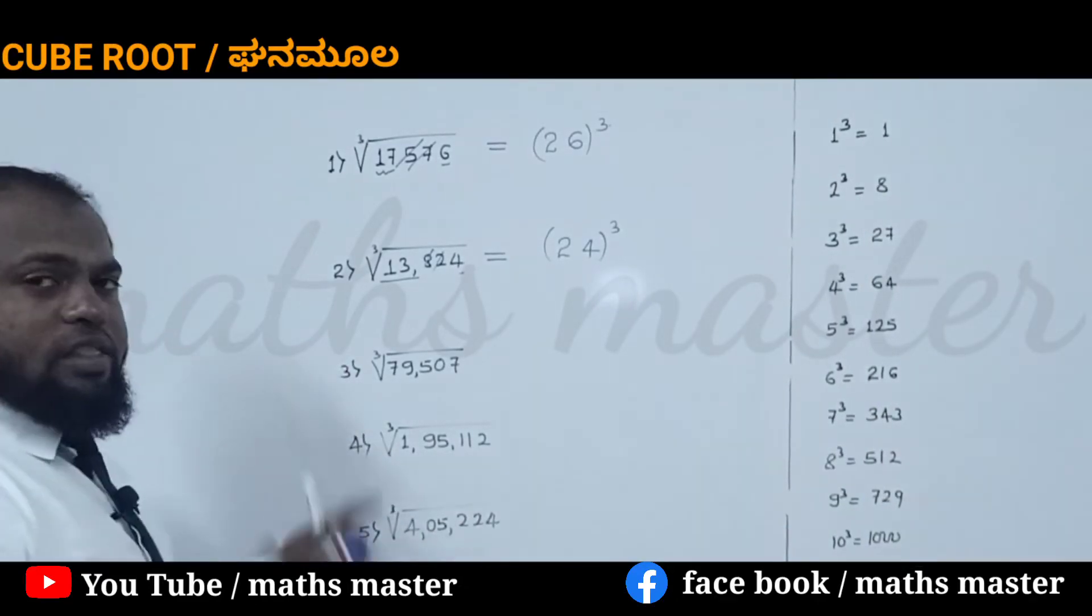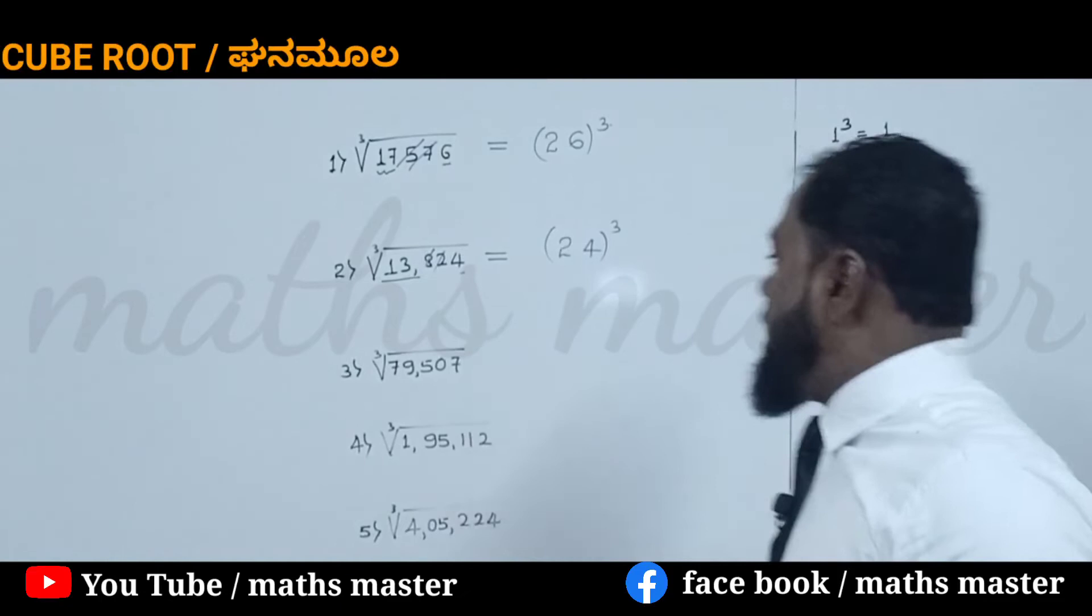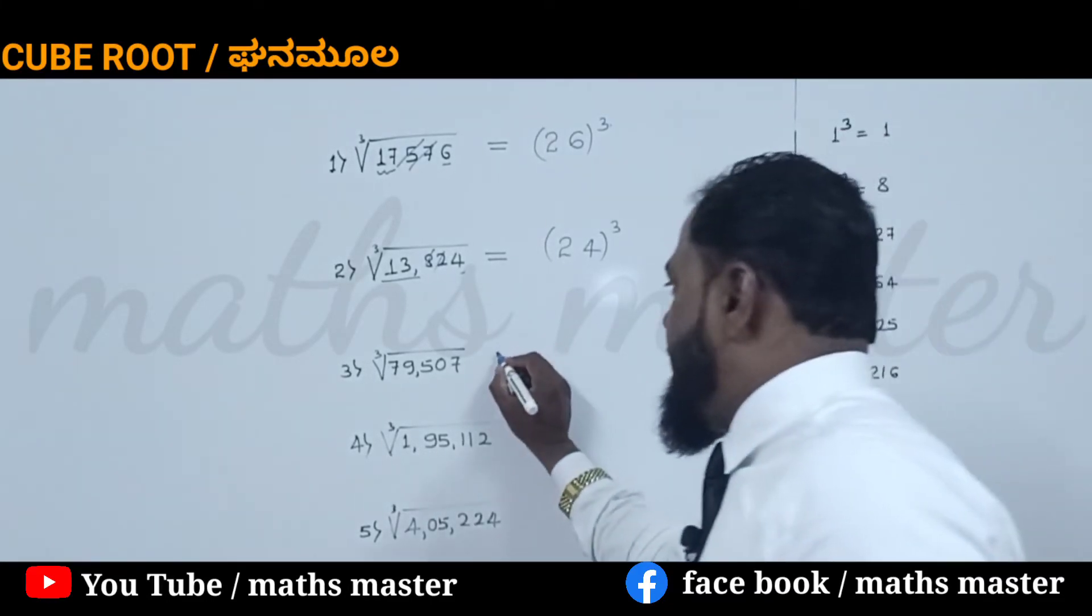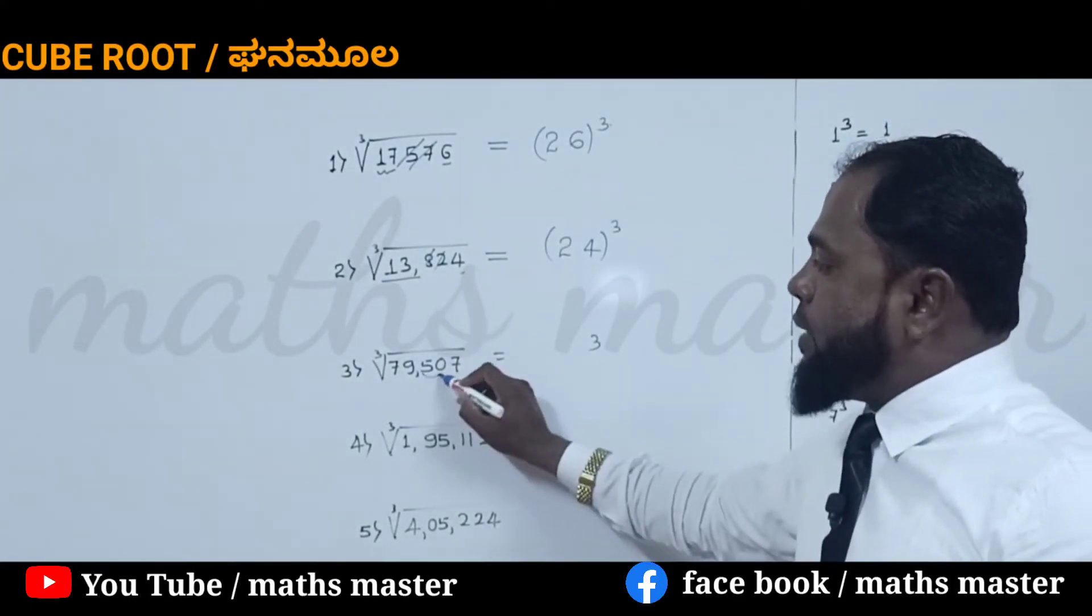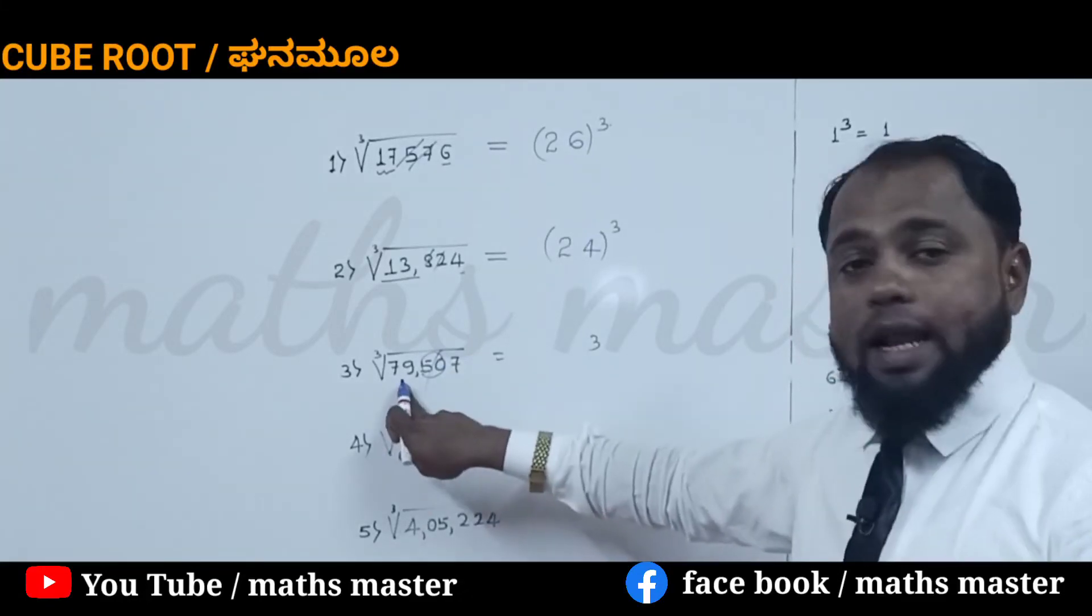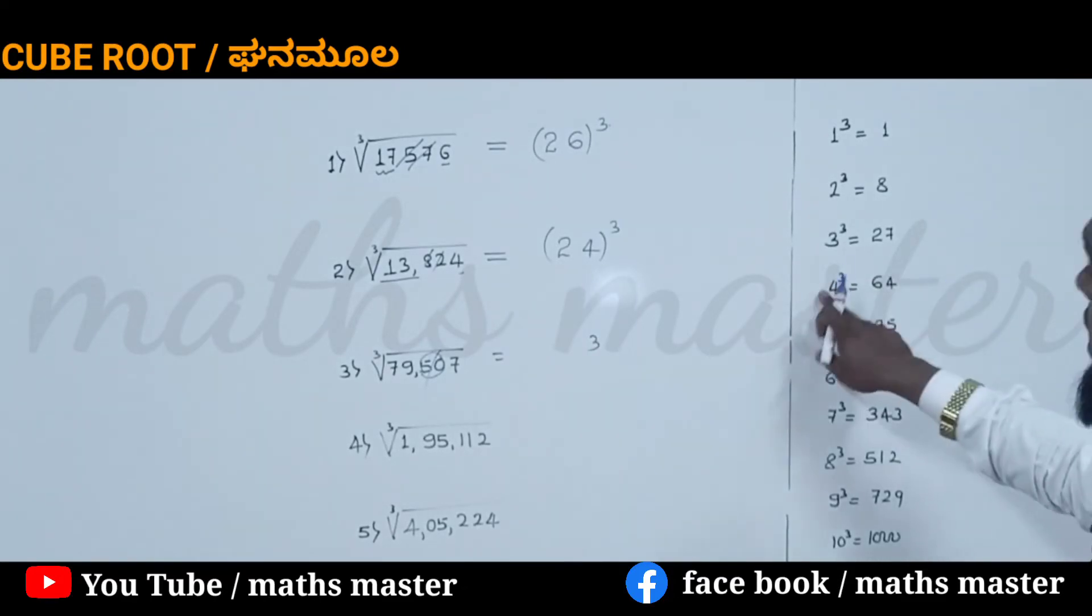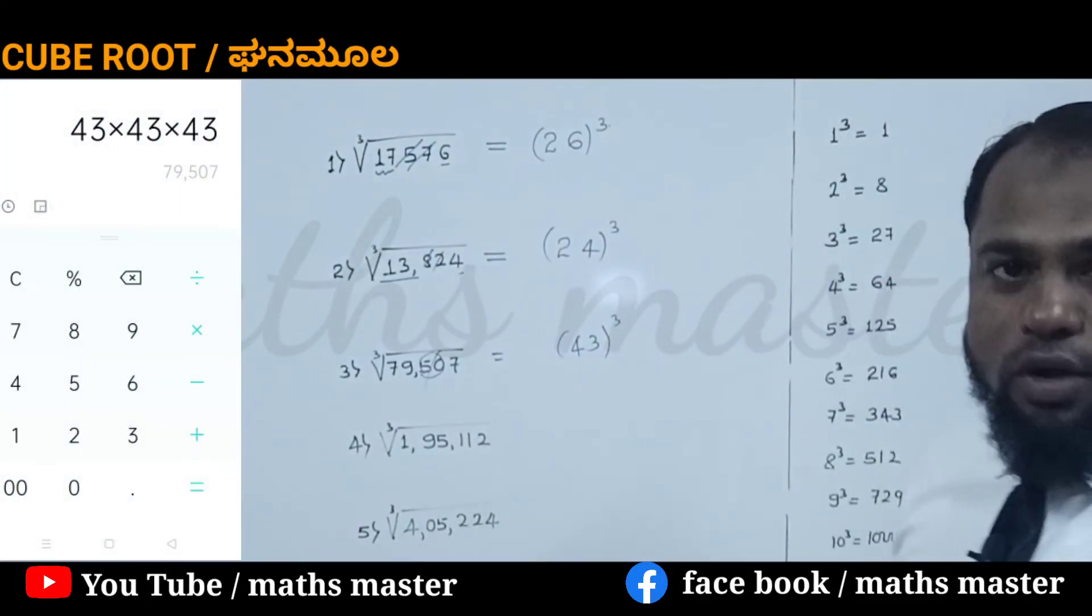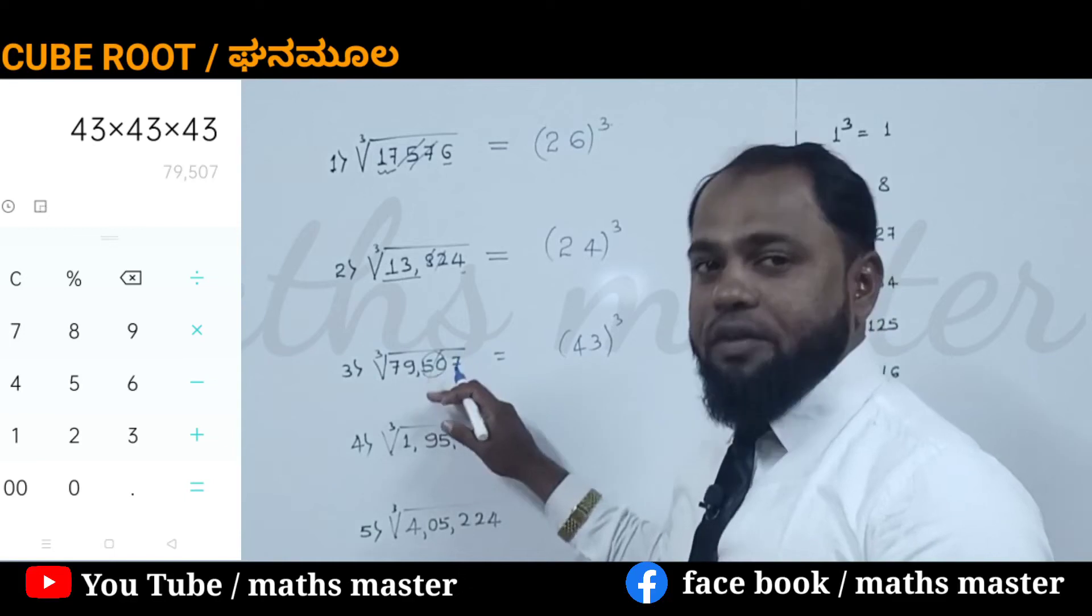There are three more examples. The first step is to see what number is in the unit place. 7 is there. 7 cubed is 343, so 3 will come in its unit place. Skip 2 digits. 79 is the remaining number. The nearest cube is 64, which is 4 cubed. So it is definitely a cube of 43. If you multiply 43 × 43 × 43, we will get 79,507.